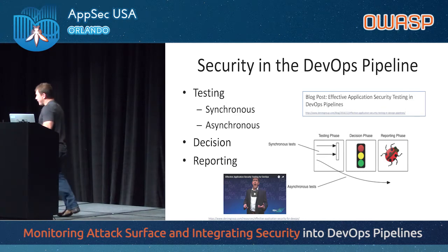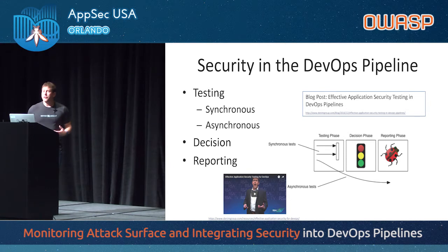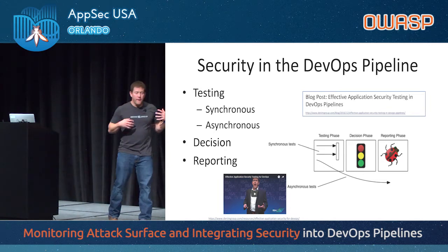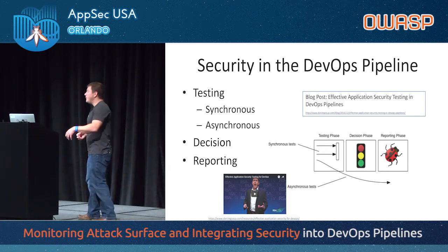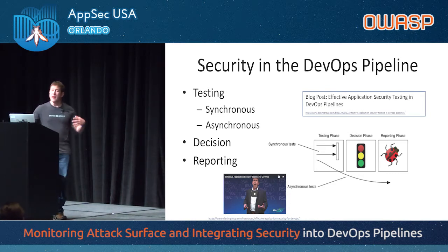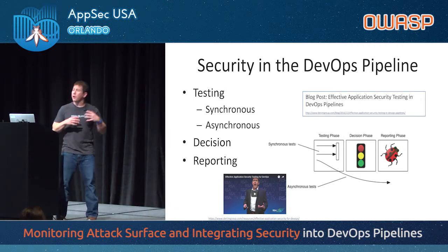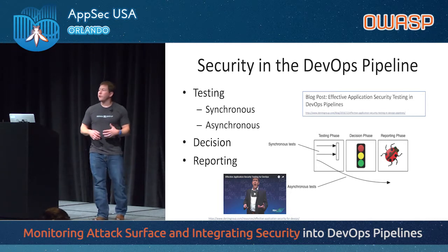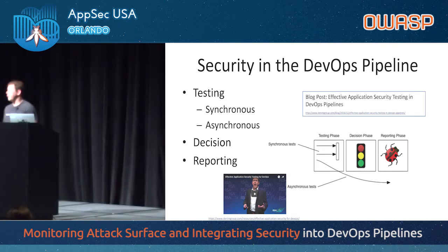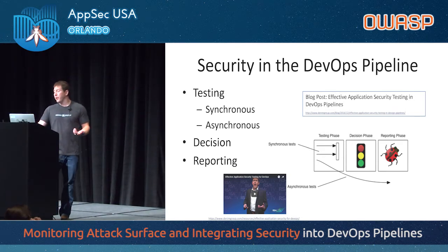Finally, reporting. One of the critical decisions organizations have to make is how do you report vulnerabilities to developers? How many people email PDFs to development teams? That doesn't work great. What we've found is you have to integrate security testing results into Jira, or whatever defect tracking system the developers are using. You need to take advantage of those tools and piggyback on the investment developer teams have made — both in the tools and the processes and meeting flow around them. From a reporting standpoint, you need to be judicious about what you report, but you also have to report it into the tools the development teams are already using. Otherwise, you're not in the flow and you're going to be ignored.